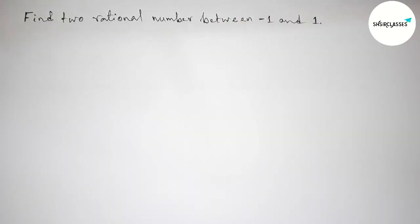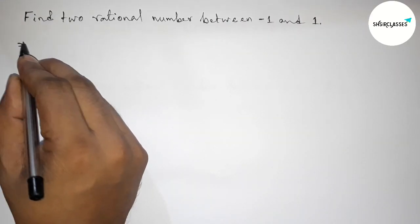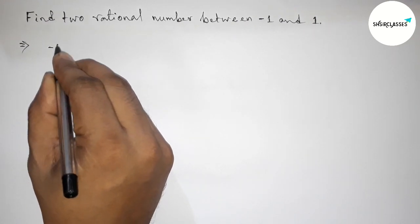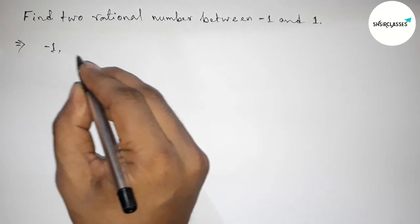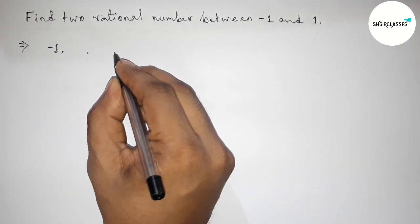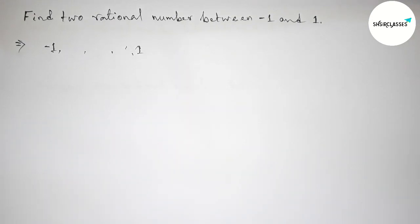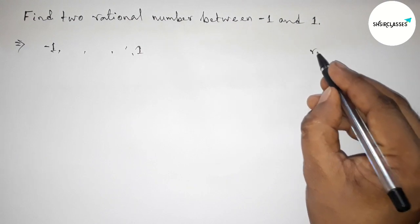First of all, let us solve this problem here. Between minus one and one, we have to find two rational numbers. So first, write down minus one and take two blanks between minus one and one. Now we have to fill up these two blanks.